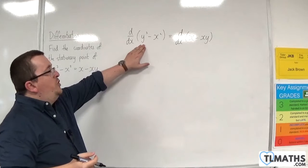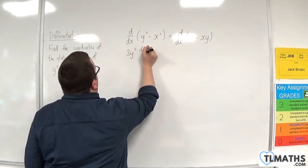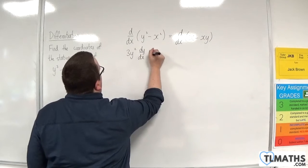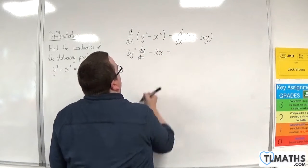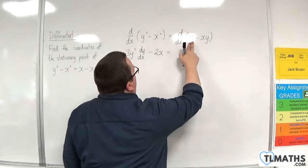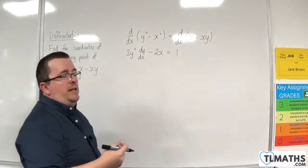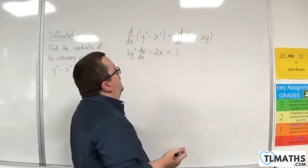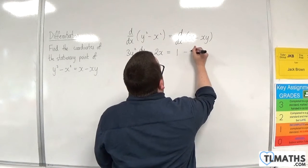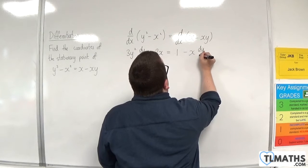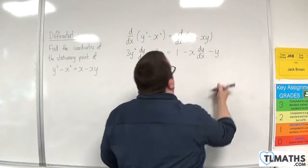So differentiate y³ with respect to x, that will be 3y² dy/dx. Minus x² differentiates to minus 2x. Then the right-hand side, x differentiates to 1. And minus xy will have to differentiate using the product rule. So we've got minus x times the derivative of y, so minus x dy/dx, and then y times the derivative of minus x, so minus y.